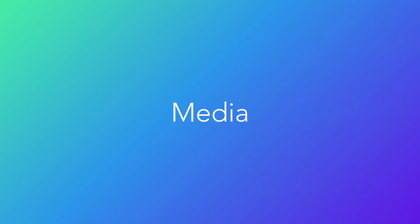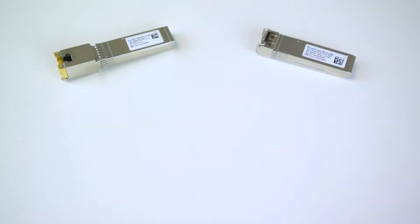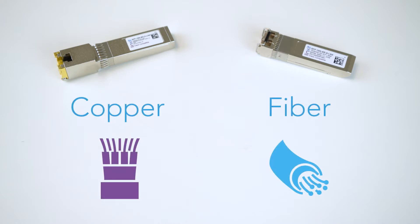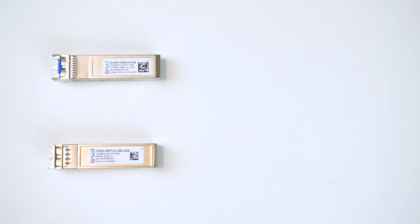Media refers to the physical composition of the cable that carries your data signals. Copper transceivers transmit electrical signals via copper cable, while fiber optic transceivers transmit light signals via optical fibers. Both media perform pretty similar at short range. However, fiber transceivers offer greater cost efficiency for Ethernet at distance.